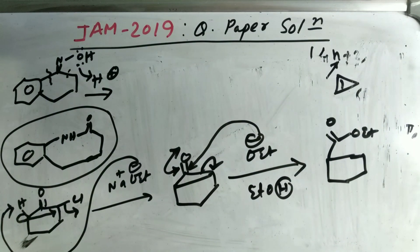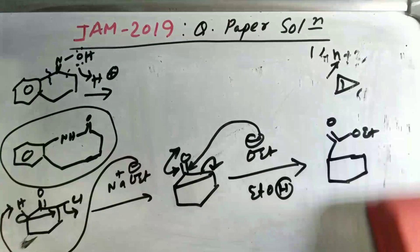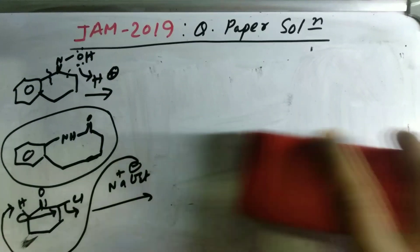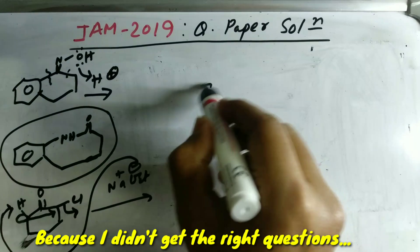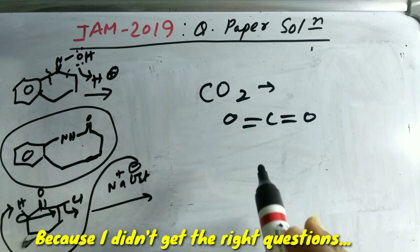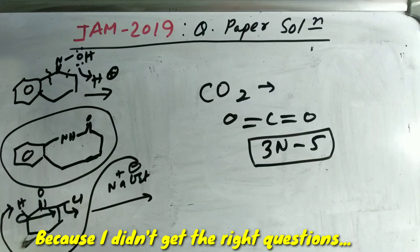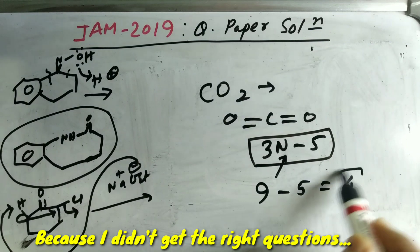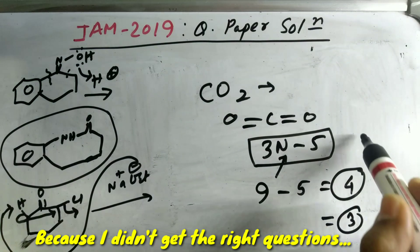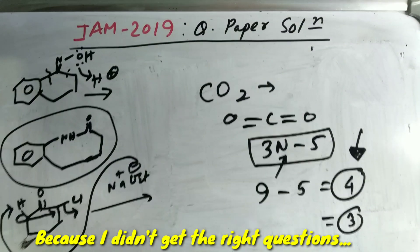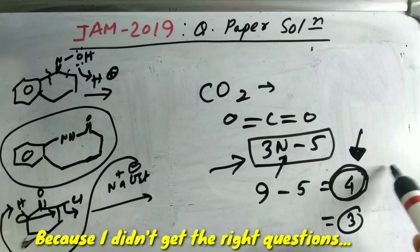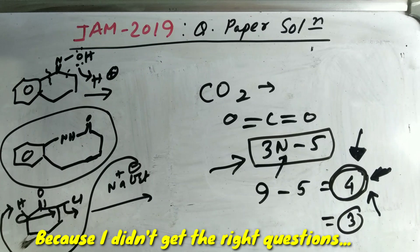There was a confusing question about the vibrational modes of motion of CO₂. CO₂ is a linear system with n = 3 atoms, so the total number of vibrational modes = 3n - 5 = 9 - 5 = 4. However, 2 of these bending modes are degenerate, so the distinct modes could be counted as 3. My opinion is the answer should be 4, since the question asks for the number of vibrational modes of motion. Apply this formula and you get 4.